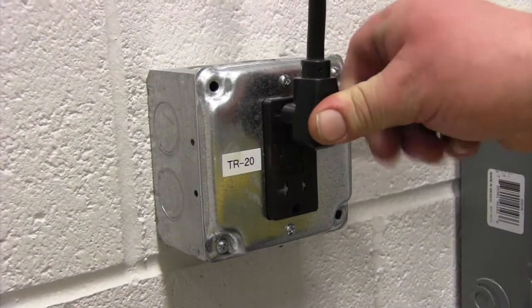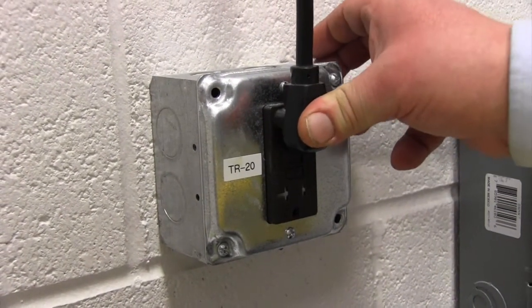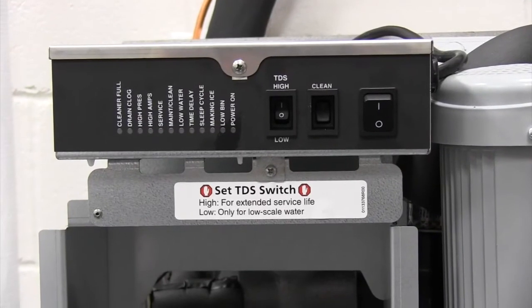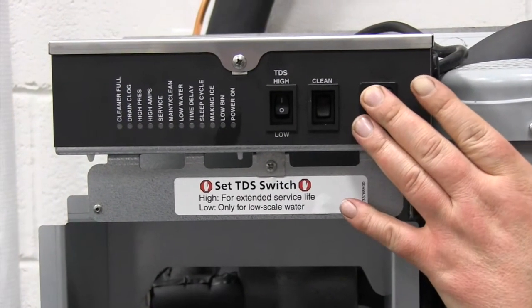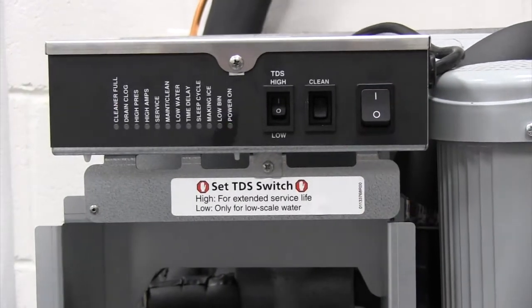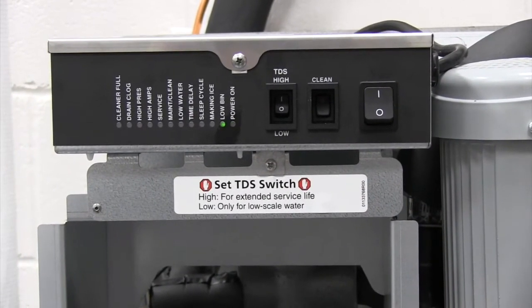Next thing we're going to do is go ahead and plug the socket into the outlet. When the unit is ready to be charged, you're going to go ahead and turn the power on to the ice machine so the liquid line solenoid turns on so that you can put a charge in your outdoor unit.